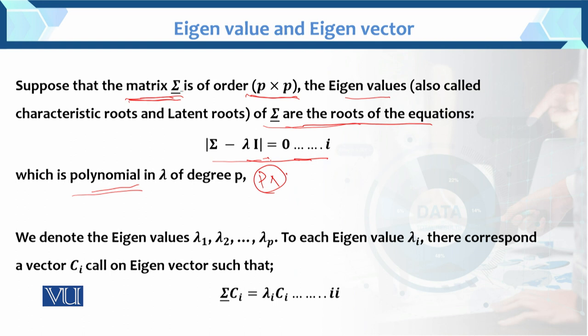Corresponding to these p eigenvalues, we have p eigenvectors. We denote the eigenvalues as λ₁, λ₂, ..., λₚ. For each eigenvalue, there is a corresponding eigenvector.